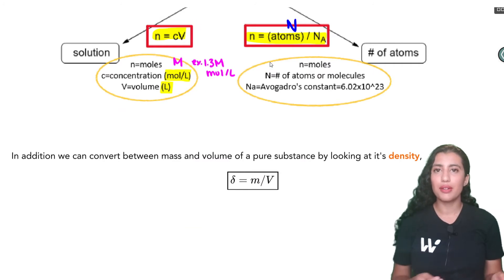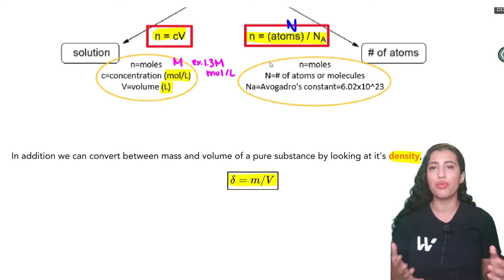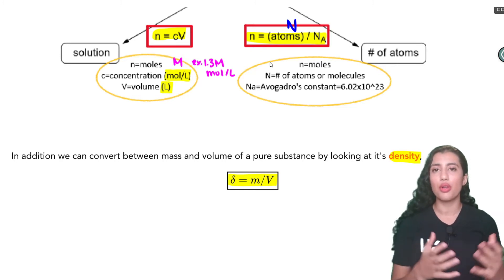The last little equation that may come in handy is the equation for density. So density is equal to mass over volume. So that might come in handy for example if you're given a density and a volume you can solve for the mass of a product or reactant.